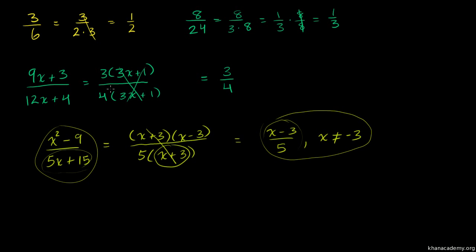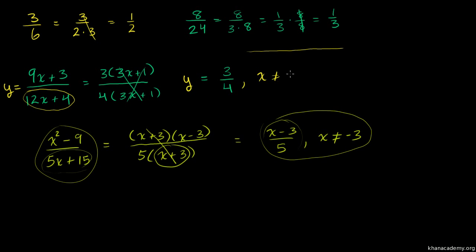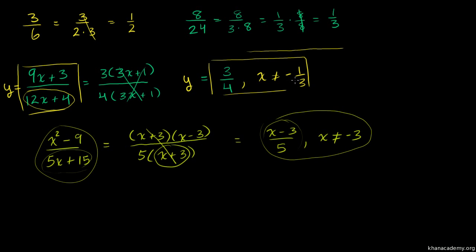Likewise, if this was a function — say y = (9x + 3)/(12x + 4) — and we wanted to graph it, after simplifying the temptation is to say this is the same graph as y = 3/4, which is just a horizontal line. But we have to exclude the x values that would have made the original denominator equal to 0. That would be x = negative 1/3, since that makes the denominator 0. So we must add the condition that x cannot equal negative 1/3. That condition is what truly makes the simplified expression equal to the original.